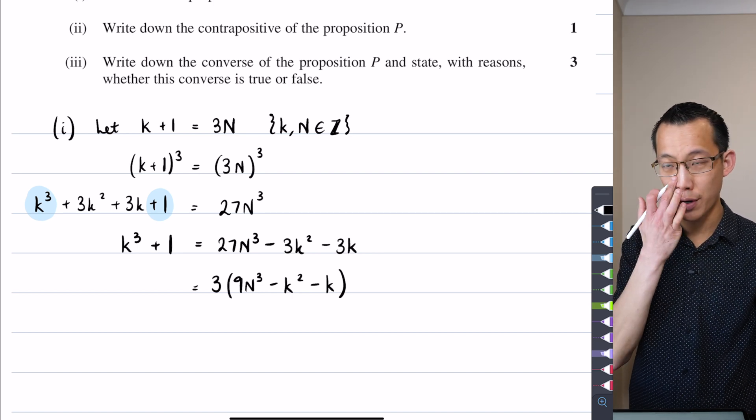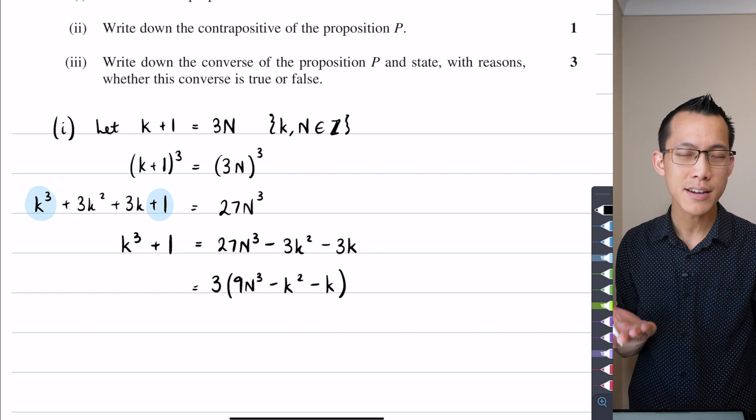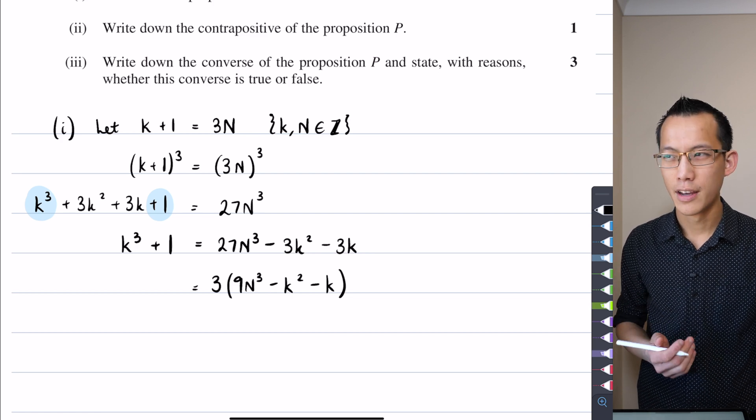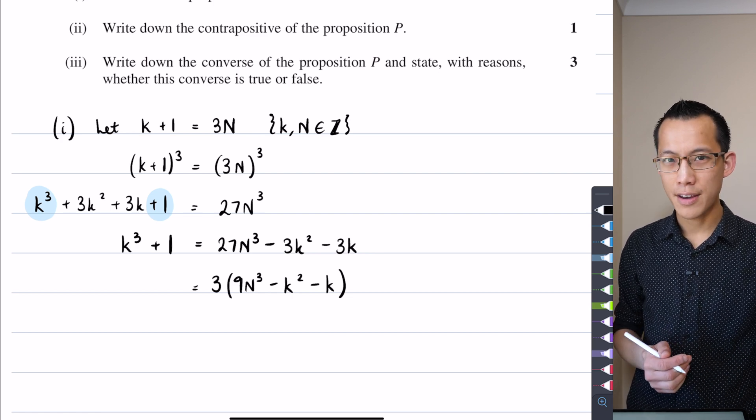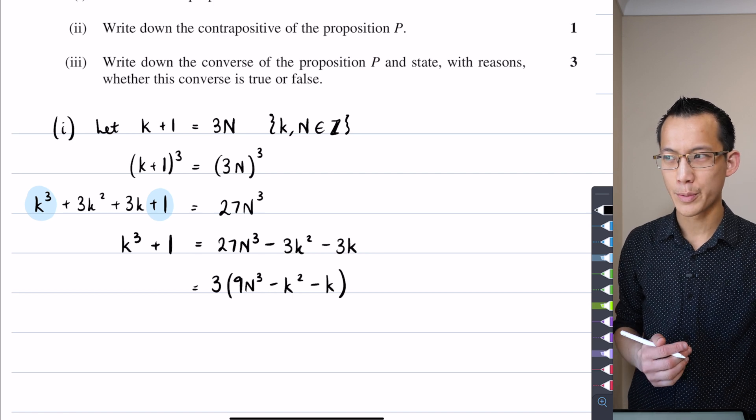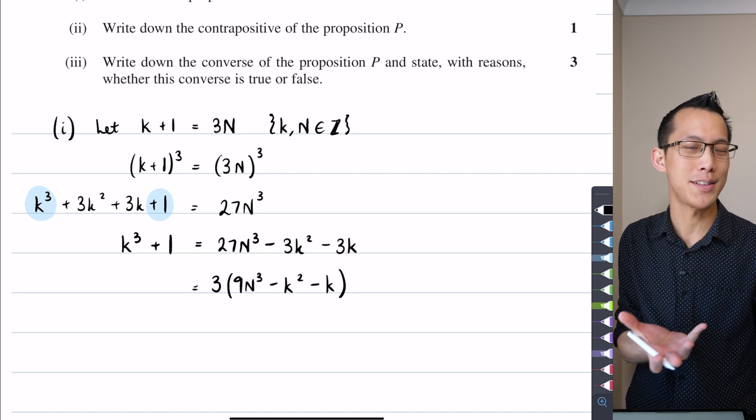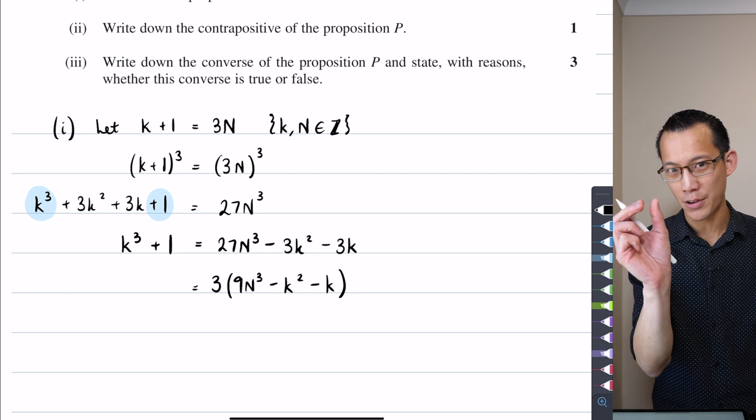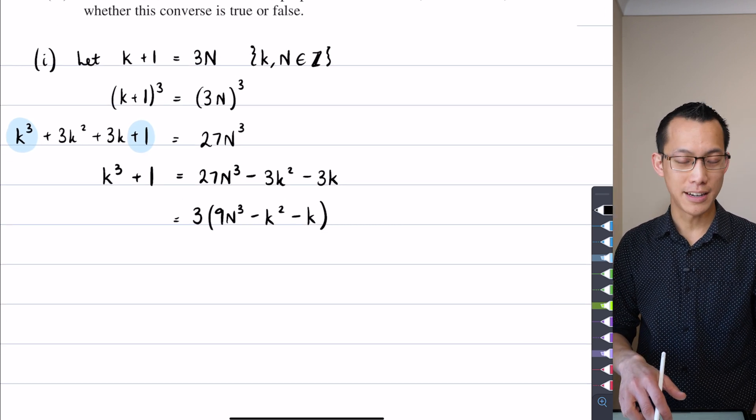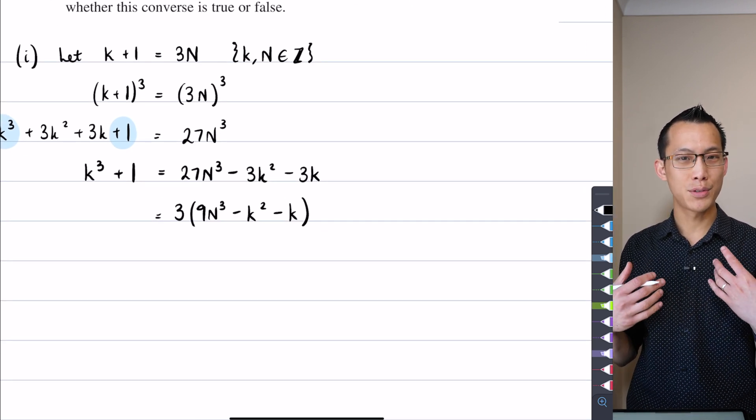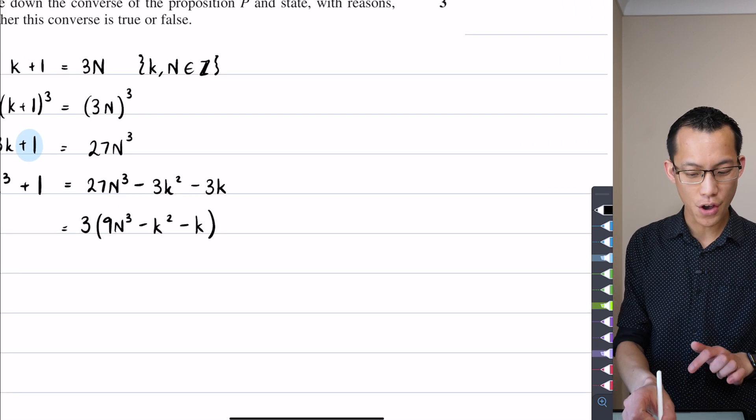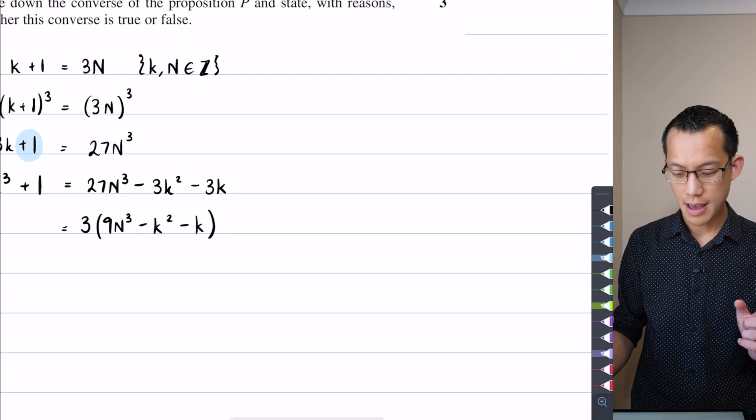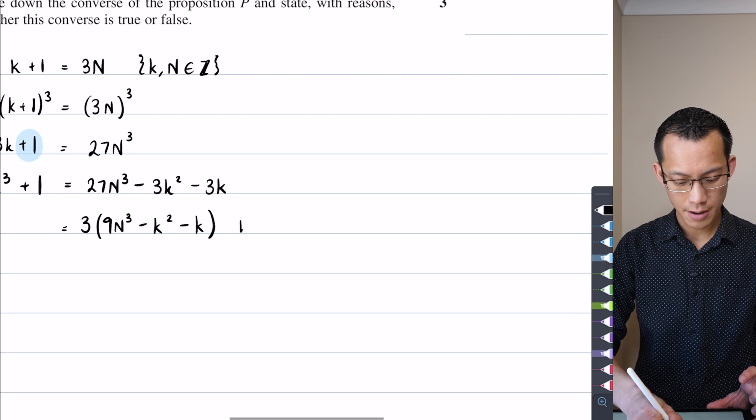Just because you've got 3 times something, that doesn't mean you've got a multiple of 3. I could say, is 5 divisible by 3? Because that's equal to 3 times 5 thirds. But 5 thirds is not an integer. So that component, the other factor, needs to be an integer. So I'm actually going to draw out, based on my earlier reasoning up here, the fact that that is true. I can say, but...